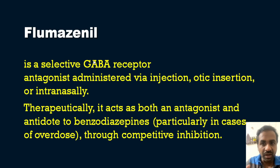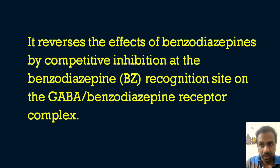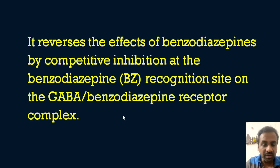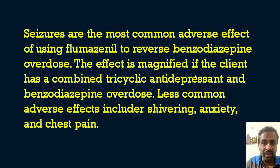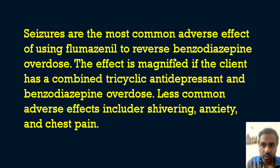Flumazenil reverses the effects of benzodiazepines by competitive inhibition at the benzodiazepine recognition site on the GABA/benzodiazepine receptor complex. Seizures are the most common adverse effect of using flumazenil to reverse benzodiazepine overdose. This effect is magnified if the client has a combined tricyclic antidepressant and benzodiazepine overdose. Less common adverse effects include shivering, anxiety, and chest pain.